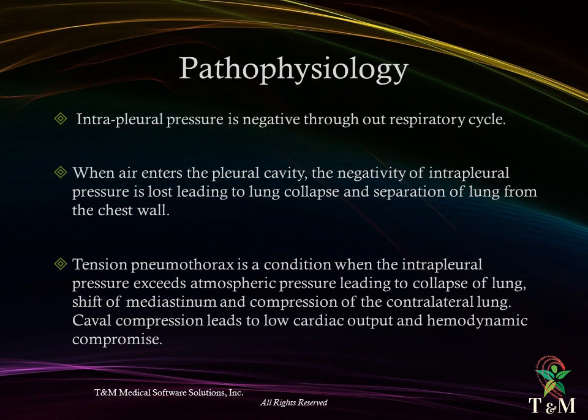Pathophysiology: intrapleural pressure is negative throughout the respiratory cycle. When air enters the pleural cavity, the negativity of intrapleural pressure is lost, leading to lung collapse and separation of the lung from the chest wall. Tension pneumothorax is a condition when intrapleural pressure exceeds atmospheric pressure, leading to collapse of the lung, shift of the mediastinum, and compression of the contralateral lung. Caval compression leads to low cardiac output and hemodynamic compromise.